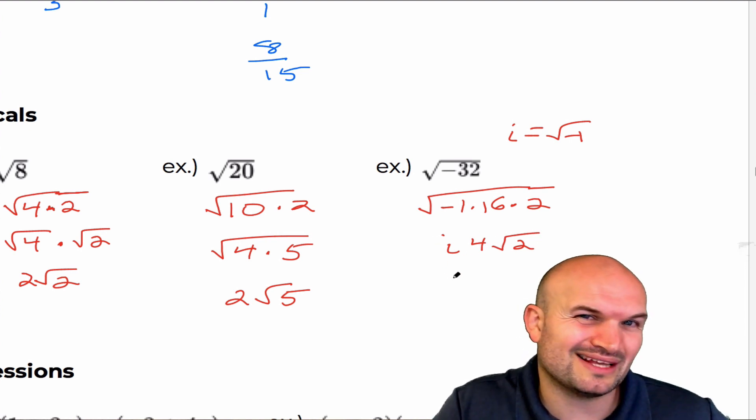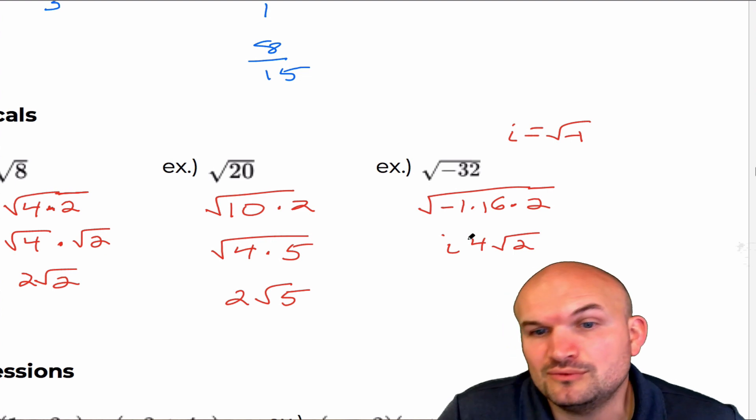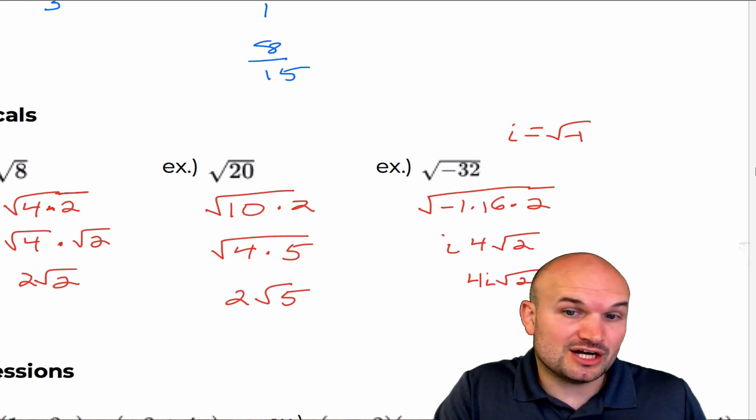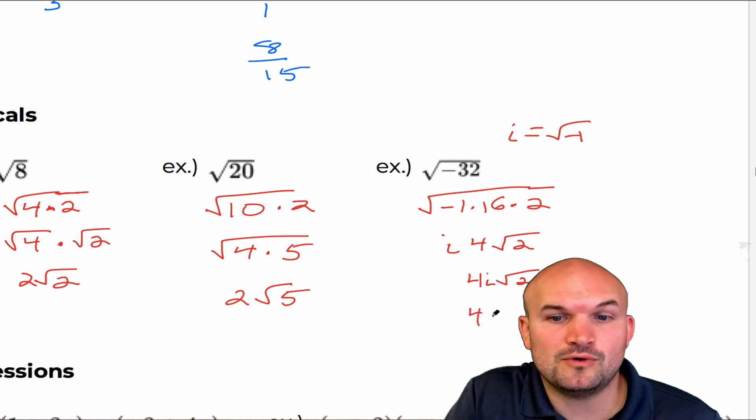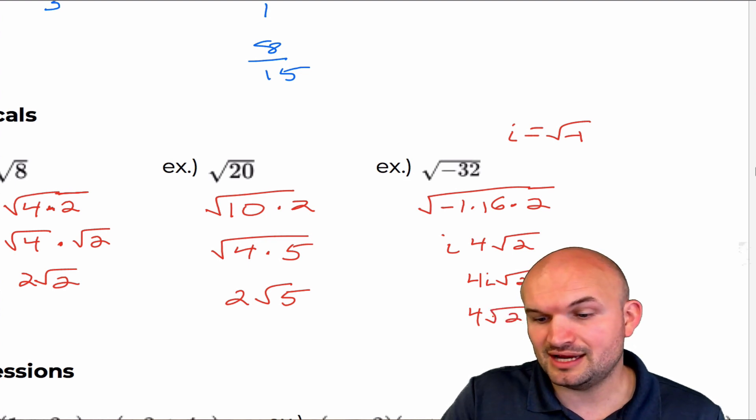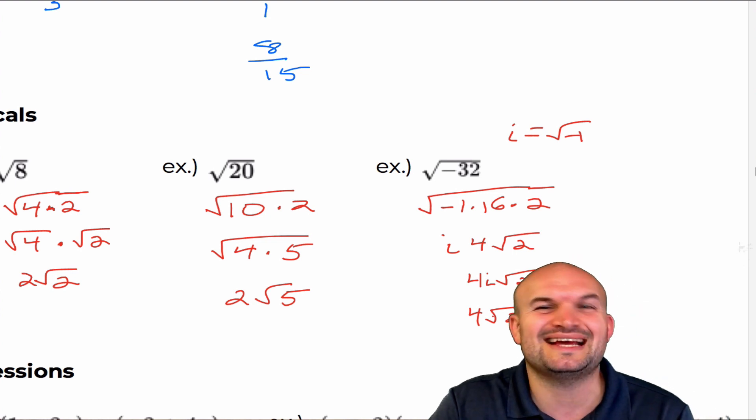Now, usually we don't want to write this as i four. Just like i is, even though i is not a variable, we like to write it after our number. So we'd write this as four i times the square root of two. Now you could also write the i at the end for square root of two, but if you write it like this, it's going to look like it's under the radical, right? And we don't want the i to be under the radical. So a lot of times what I'll do is I'll just add a little close bar on my radicals and then put the i right there.